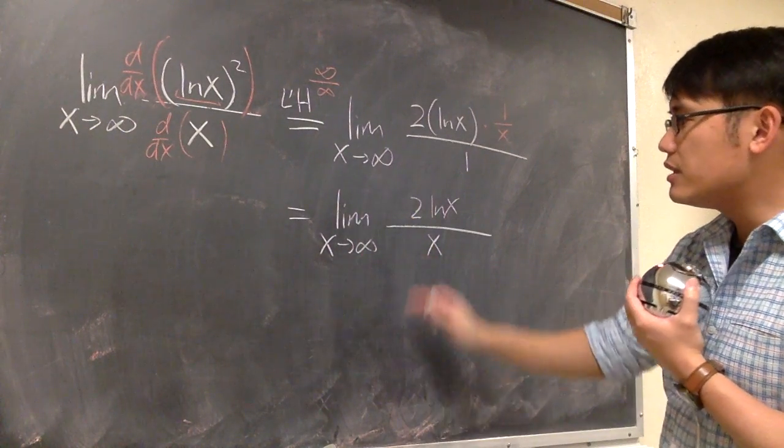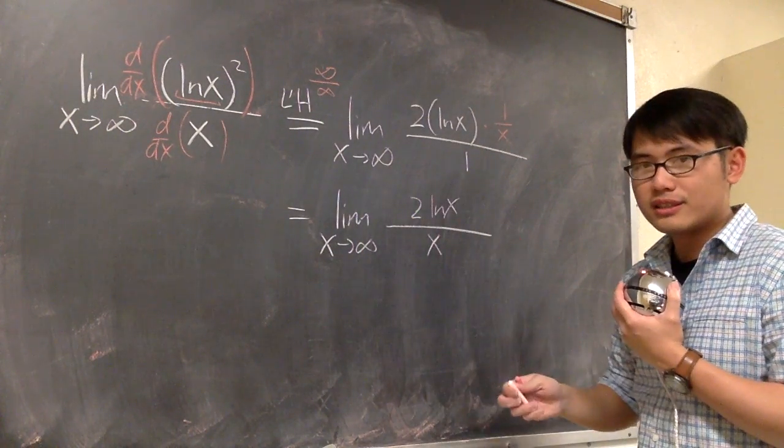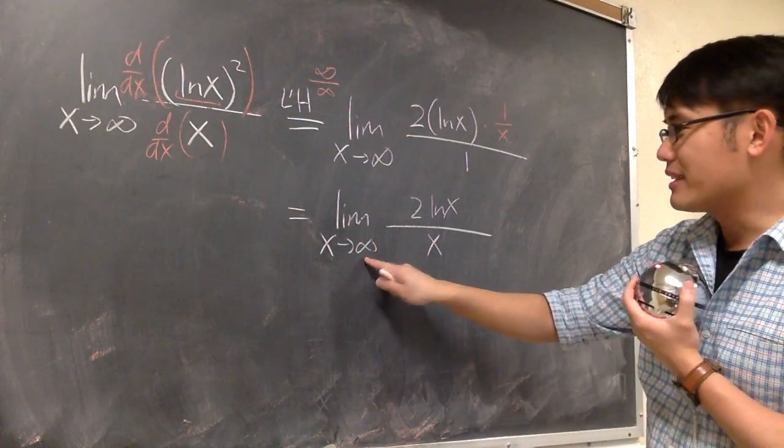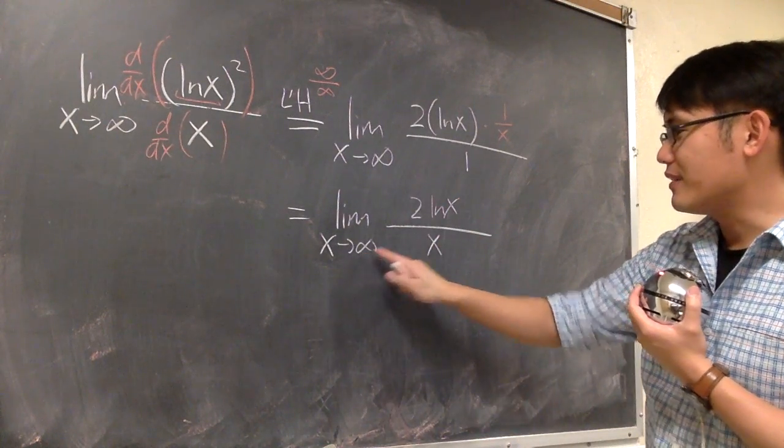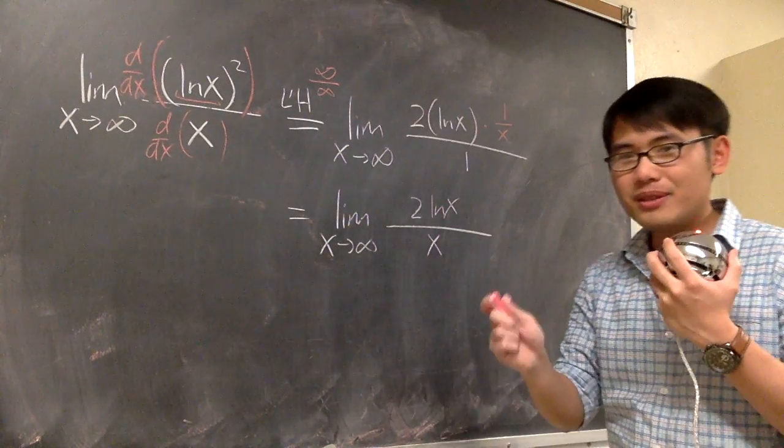So we are talking about this. The limit as x goes to infinity, 2 ln x over x. If you plug in infinity, you get infinity on the top, infinity on the bottom. So, L'Hôpital's rule again.